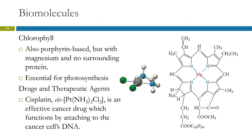Other biomolecules, chlorophyll, also porphyrin-based, but it's got magnesium is the ion it works with, and it doesn't have a surrounding protein. That, of course, is essential for photosynthesis. We've also got biomolecules used as drugs and therapeutic agents. Cisplatin is an effective cancer drug. It functions by attaching to the cancer cell's DNA.